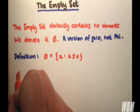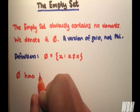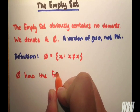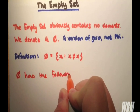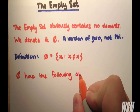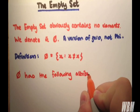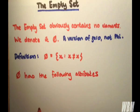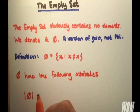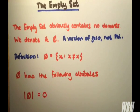So the empty set has the following attributes. The order or cardinality of it is obviously zero. Now this is where things get a little bit interesting.